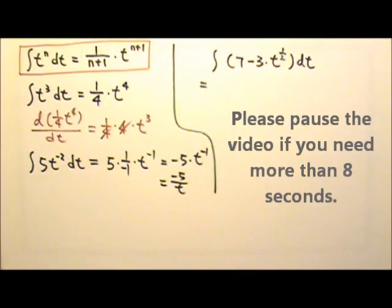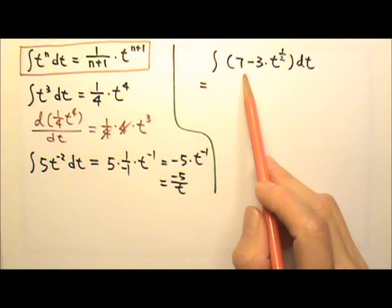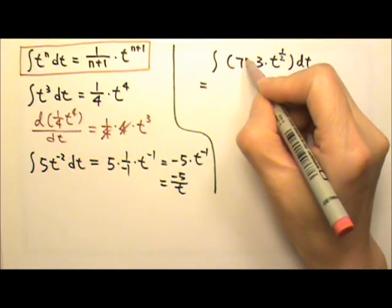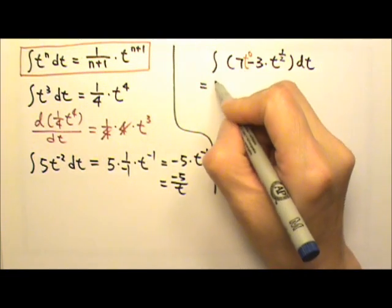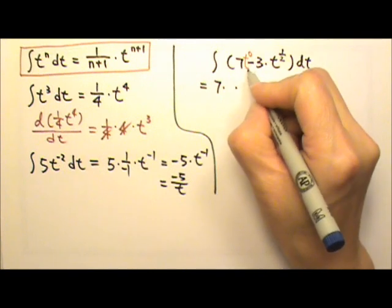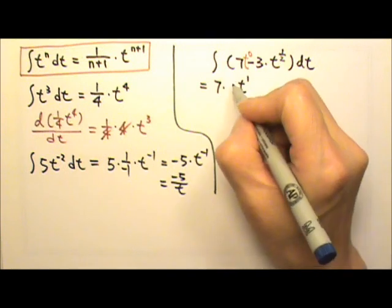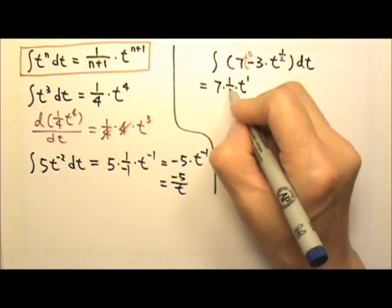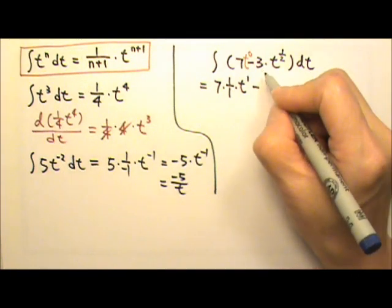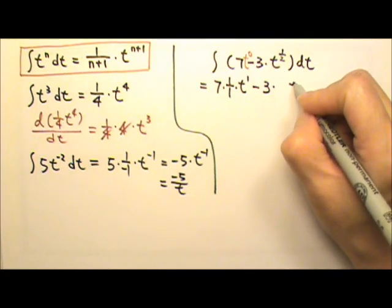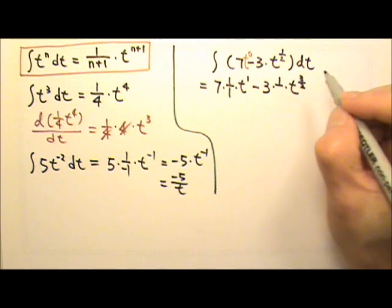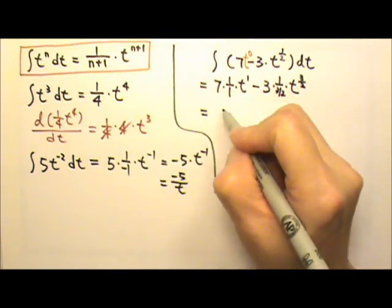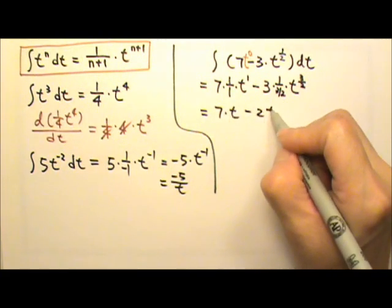Now let's try this one. There are two terms, so we will do one term at a time. Seven is the same as seven times t to the zero, because t to the zero is one. So to integrate seven, the constant coefficient seven stays right there, and we gain one degree of power, so t to the zero becomes t to the first, and we do one over the new exponent, one over one. Then we gain one degree of power, so t to the one-half becomes t to the three-halves, and we divide by three-halves. This gives us seven times t minus two t to the three-halves.